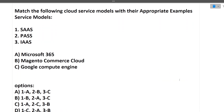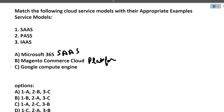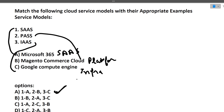Next: match the cloud service models with their appropriate examples — SaaS (Software as a Service), PaaS (Platform as a Service), and IaaS (Infrastructure as a Service). Microsoft 365 maps to SaaS. Magento Commerce Cloud maps to PaaS. Google Compute Engine maps to IaaS. So the correct mapping is 1-A, 2-B, 3-C.